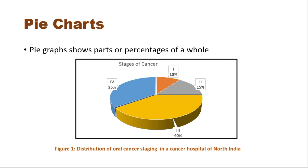A pie graph shows parts or percentages of a whole. Figure one represents the distribution of oral cancer staging in a cancer hospital of North India. Since cancer data covers all four stages — stage one to four — this pie graph divides all patients into different categories of cancer stages, representing their numbers and percentages. We can see that the majority of patients are diagnosed with stage three, which is 40 percent.